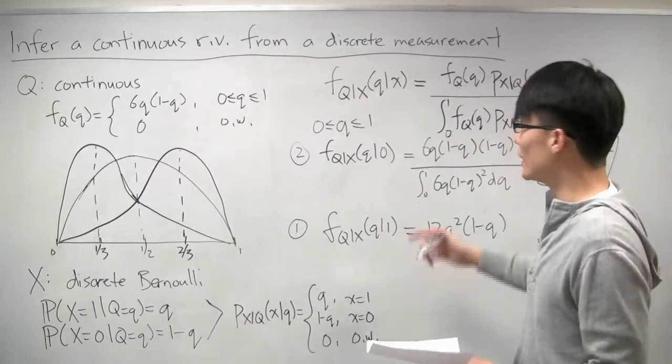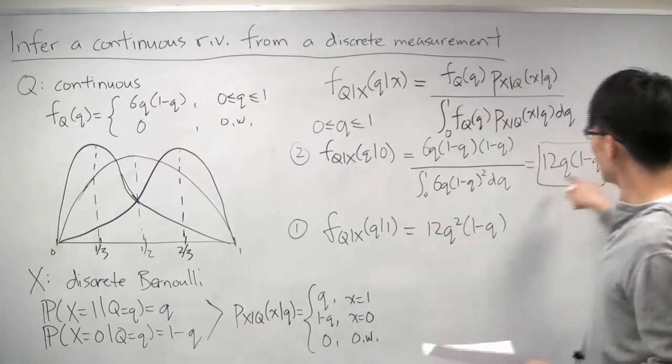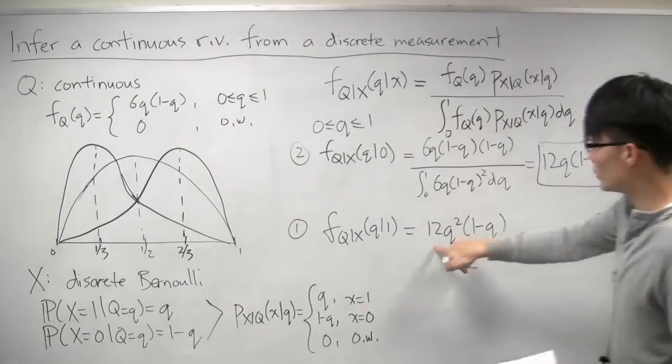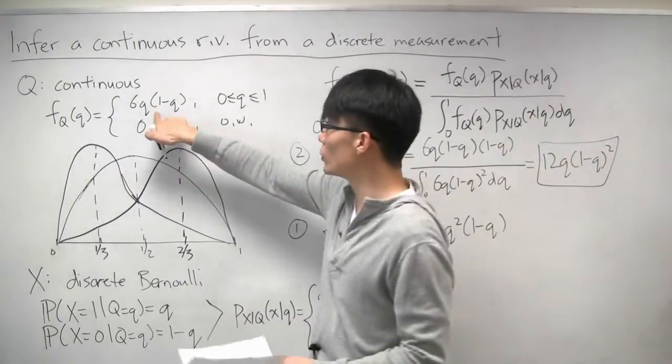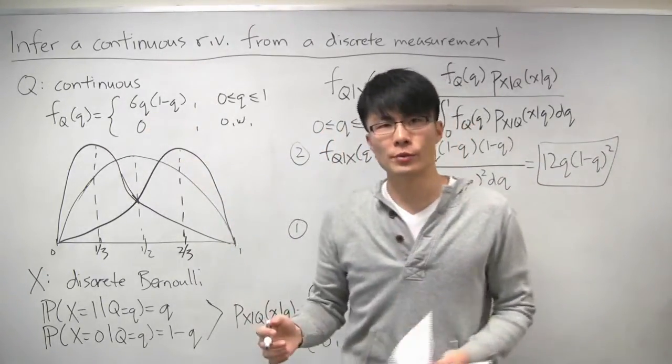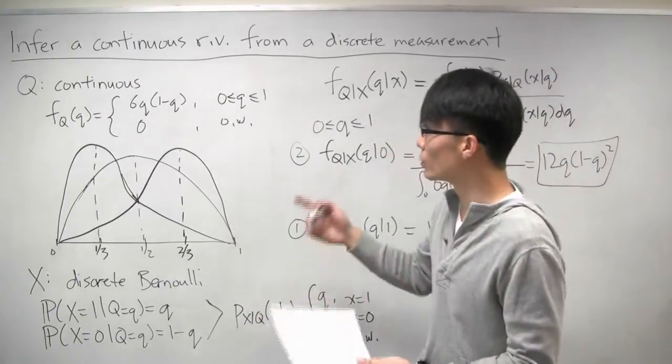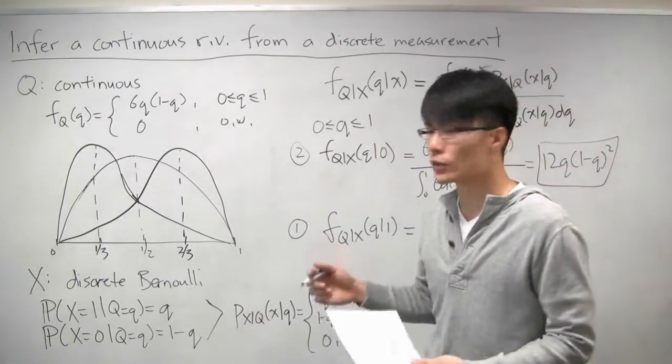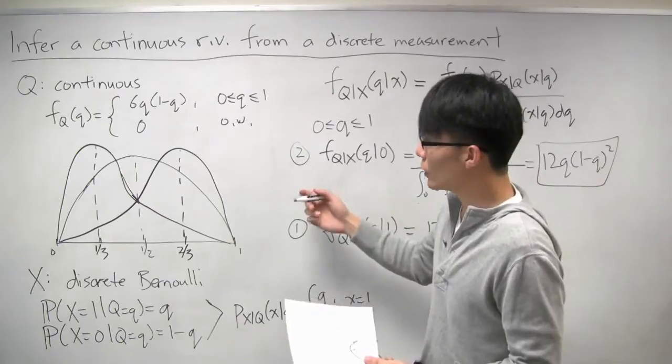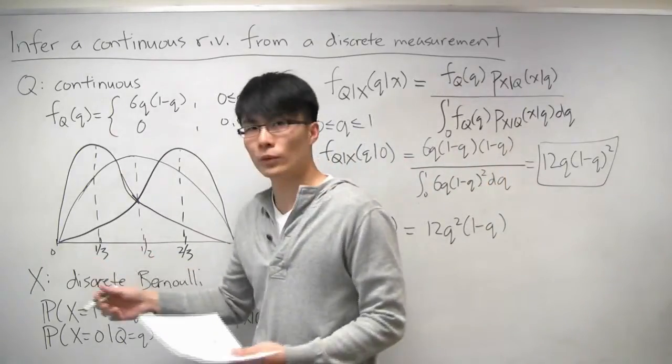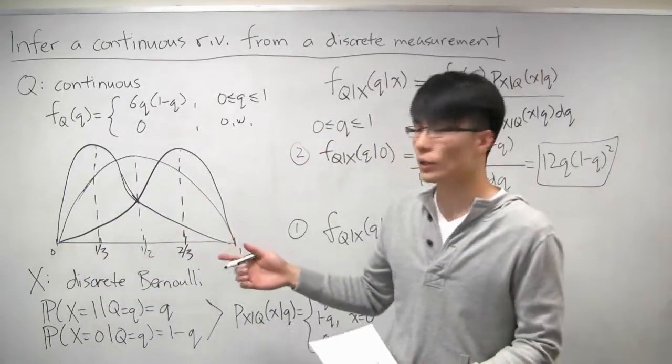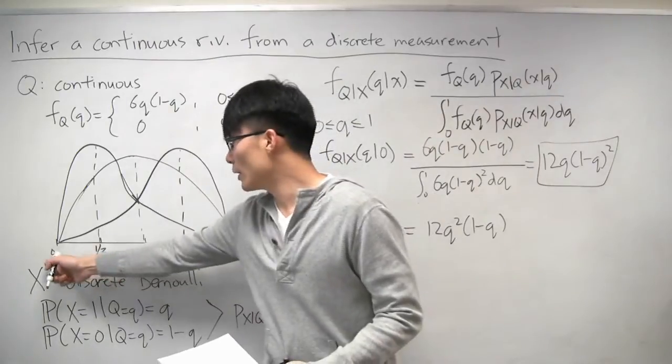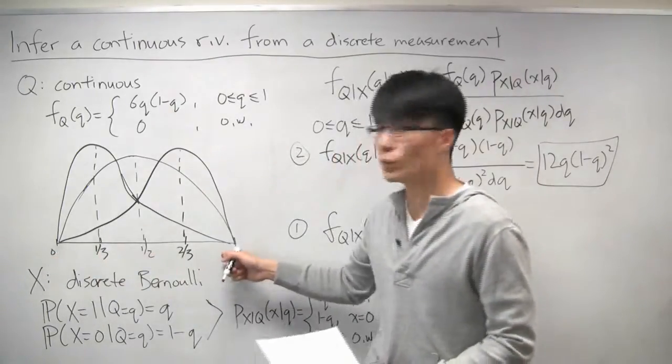So it turns out that this distribution, this distribution, and the original distribution of q all fall under a family of distributions called the beta distribution. And they're parameterized by a couple of parameters. And it's used frequently to model things like the bias of a coin or anything that's a random variable that's bounded between 0 and 1.